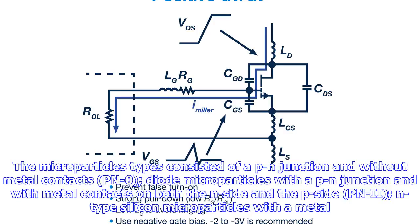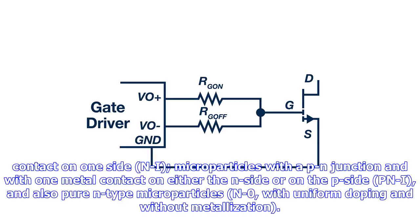The microparticle types consisted of a PN junction without metal contacts (PN0), diode microparticles with a PN junction and metal contacts on both the N side and P side (PN2), and N-type silicon microparticles with a metal contact on one side (NI).